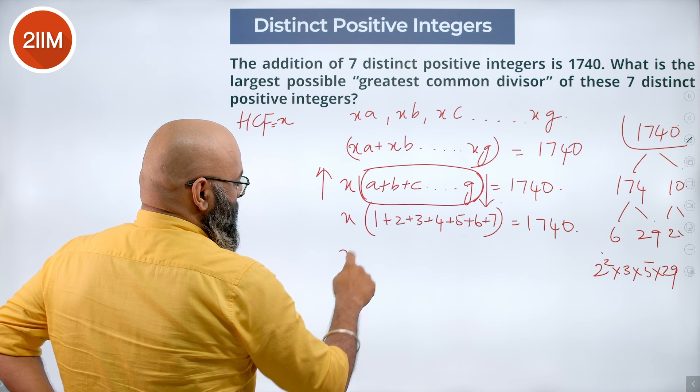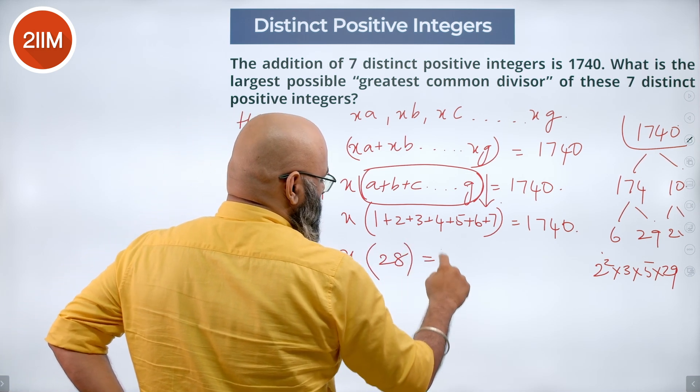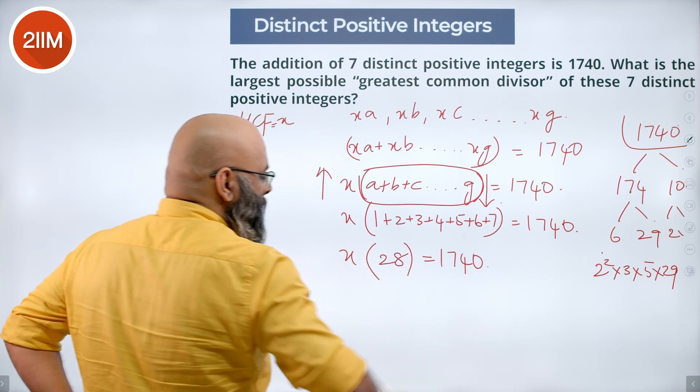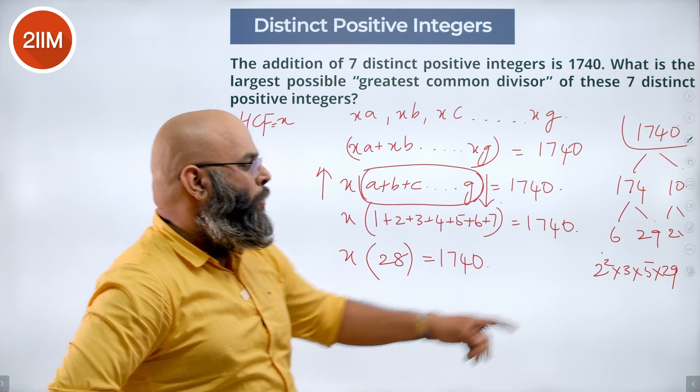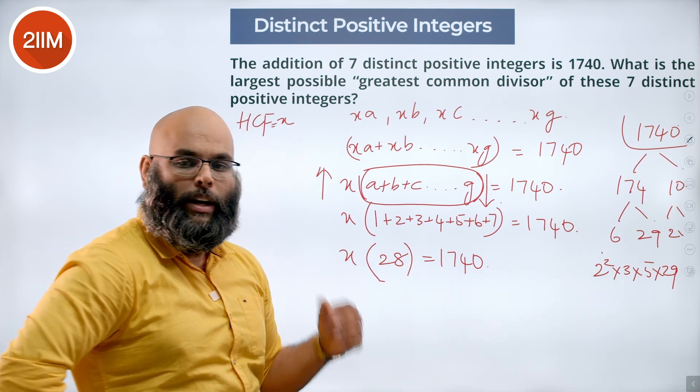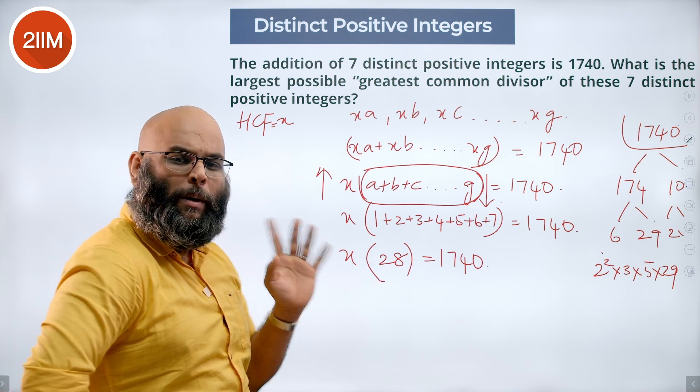Or we can say X into 28 gives you 1740. But we notice 1740 is not a multiple of 28 by any means. So this cannot be 28.